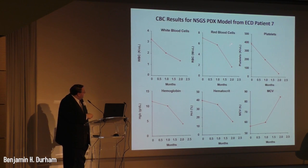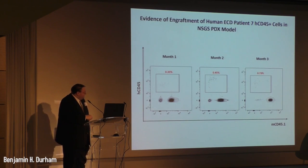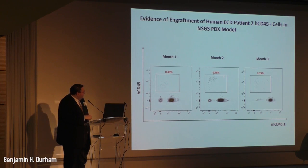Following this xenograft model over three months before it became sick, we saw progressive pancytopenia developing — progressive decrease in white blood cells and a worsening macrocytic anemia, as shown by increasing MCV. We performed flow cytometry analysis to monitor engraftment in peripheral blood. On the y-axis we have human CD45 and mouse CD45. We saw progressive but modest engraftment of human CD45-positive cells in peripheral blood, yet the mouse still became sick.